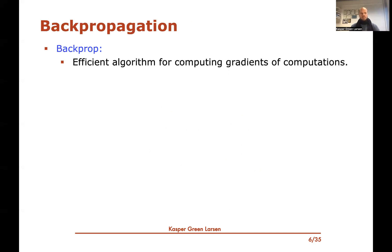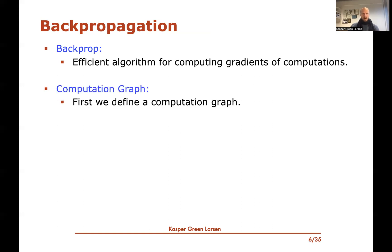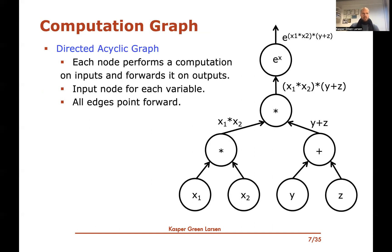To compute gradients for such a general thing as a neural net, we're going to use a very popular algorithm known as backpropagation — or backprop for short. It's a very fast algorithm for computing gradients of basically an arbitrary computation; it doesn't have to be a neural net. We'll spend the rest of the video explaining this backpropagation algorithm.